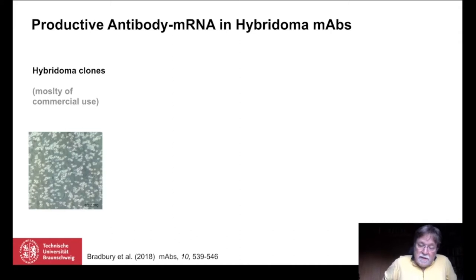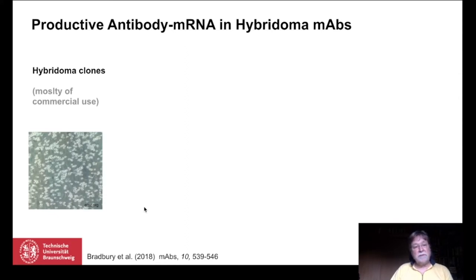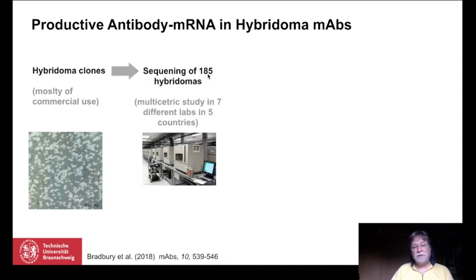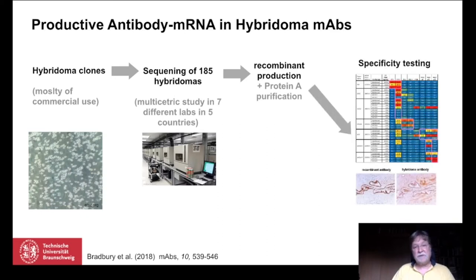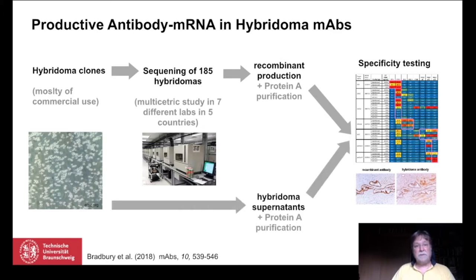You might say let's take monoclonal antibodies — they solve the problem. True for many cases, but wrong for a significant number. Here are the results of a multicentric study where we sequenced hybridoma clones — 185 different clones from seven different labs in five countries — most of them commercial viable products from catalogs. We produced them recombinantly, looked at the sequences, and compared specificity after purification on a protein A column, comparing the same purity of IgG between the recombinant and the hybridoma supernatant. We found dramatic results.